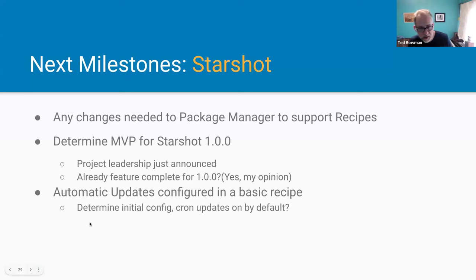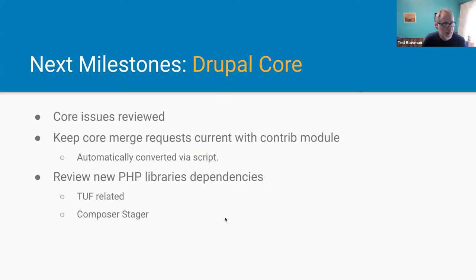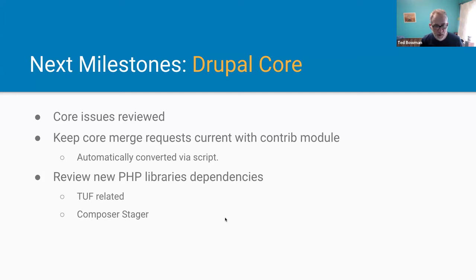We'll need Automatic Updates configured in some sort of basic recipe. What initial config will be installed? Should cron updates be on by default, or should users have to choose to turn it on? For core milestones, core issues need to be reviewed. The core merge requests are current with the contrib module — automatically converted. I have some issues in the follow-up for cleaning up the conversion script, since we won't need it after it's in core but we do use it a lot.